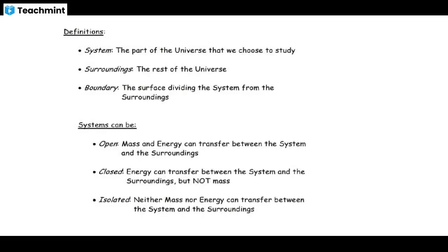The system is the part of the universe we choose to study. For example, if you take a cup of tea, the tea is the system. If you measure the temperature of the tea, the tea is the system. The surrounding is the rest of the universe. The boundary is the cup — it separates the system from the surrounding.